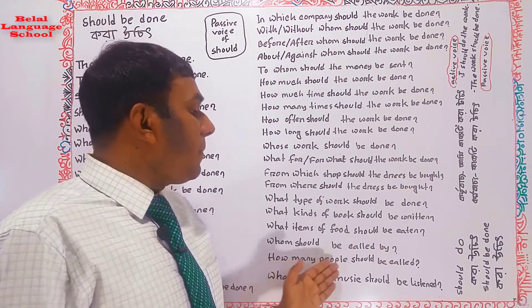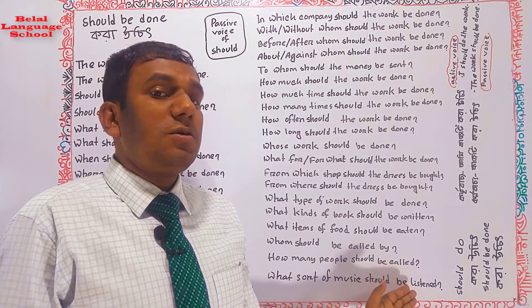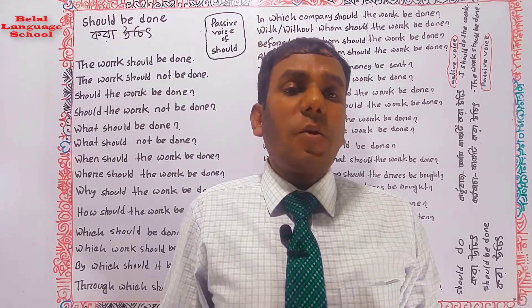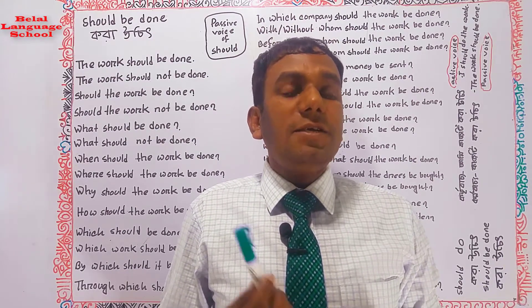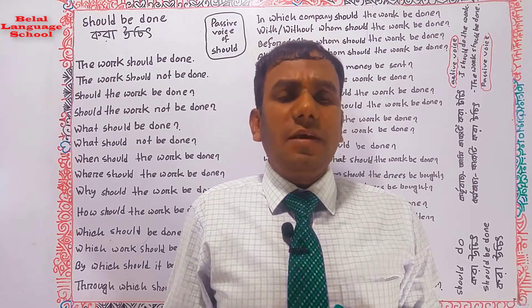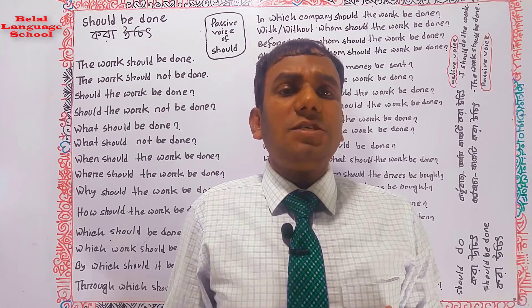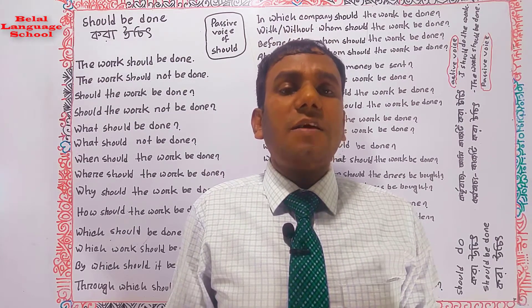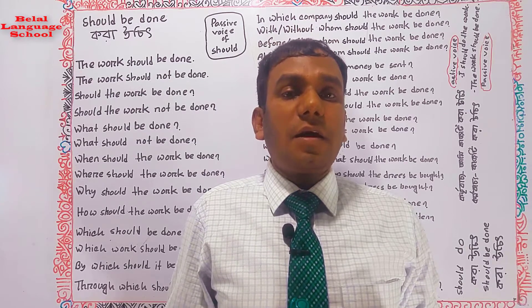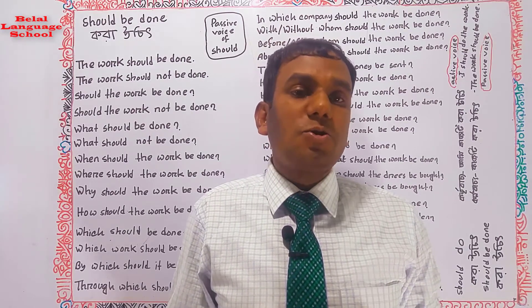How many people should be called? What sort of music should be listened to? In this way we have covered the passive voice structure with 'should be done' — kora uchit. Now let's see how from two verbs this 'should be done' passive form is derived. For example: 'I should write the letter' becomes 'The letter should be written.'